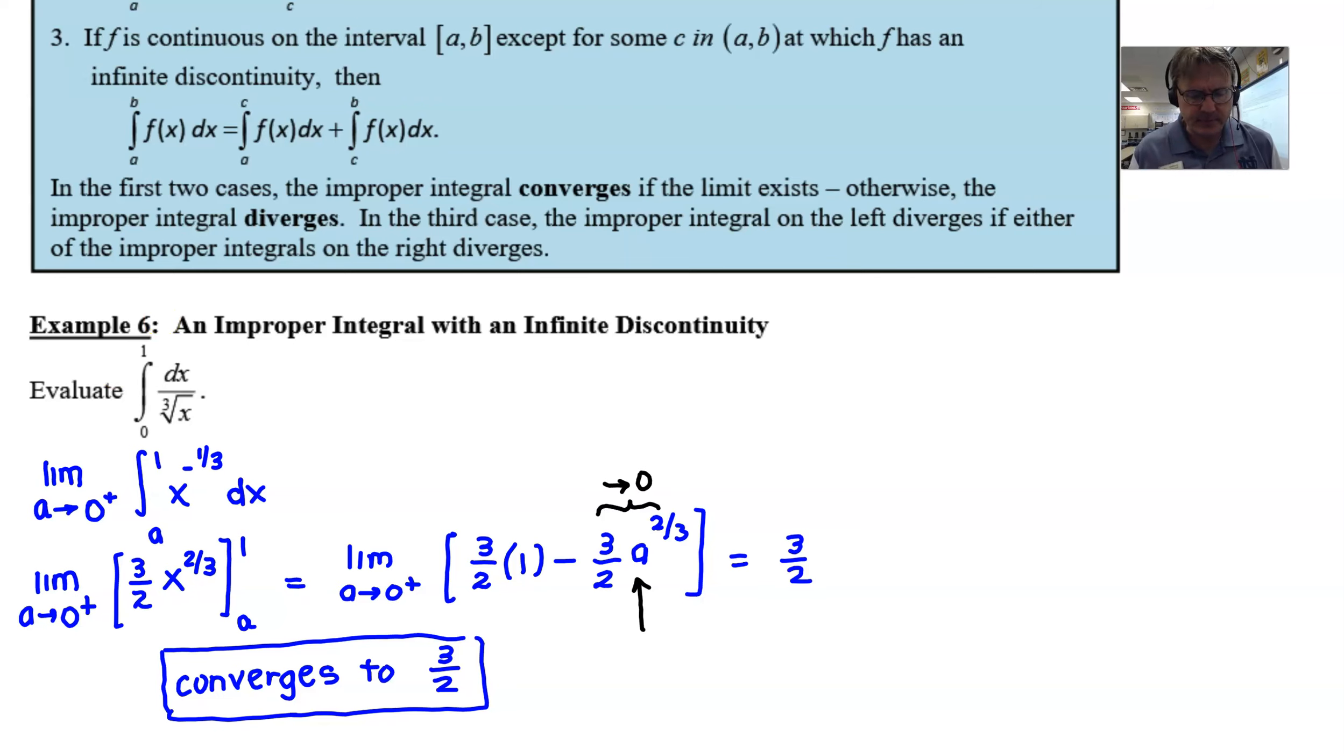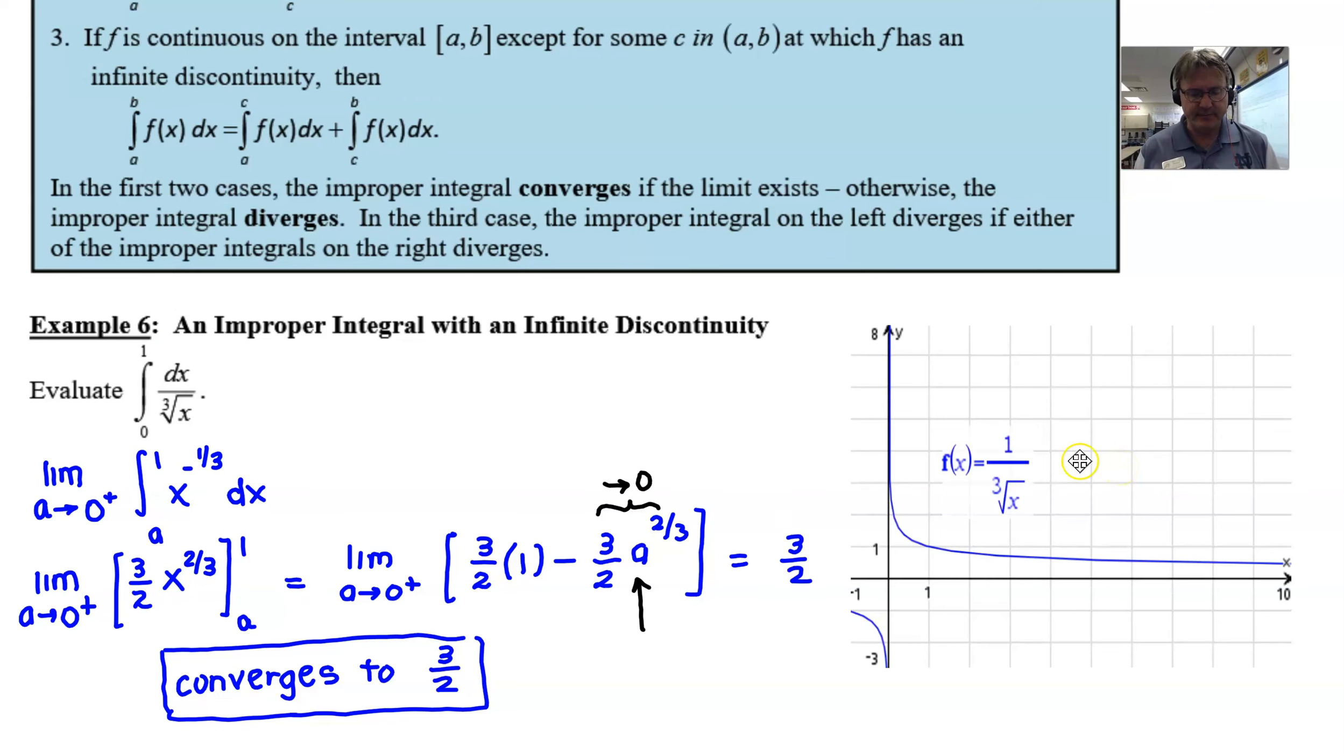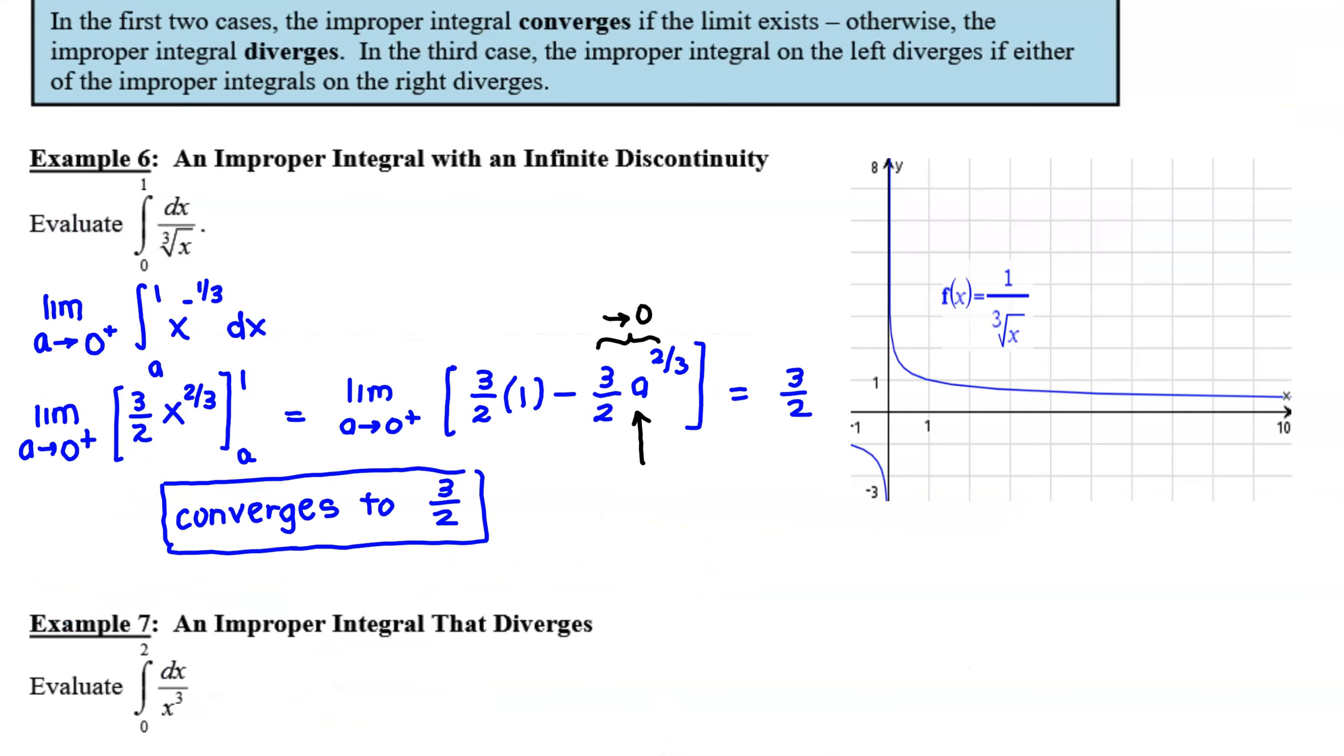If you want to get a little bit more insight into what we just did, well, it just so happens that I took it upon myself to sketch a graph of one over the cube root of x. And if we were to find the area between zero and one, we would be looking at this shape right here.